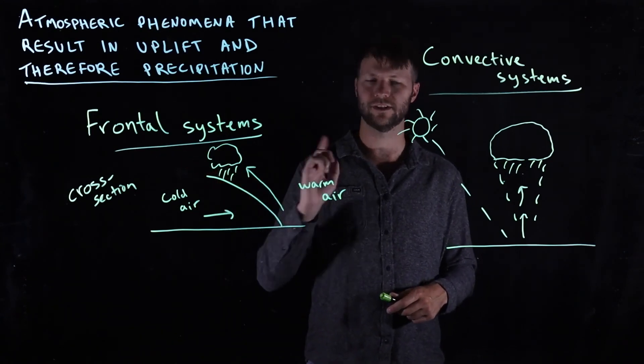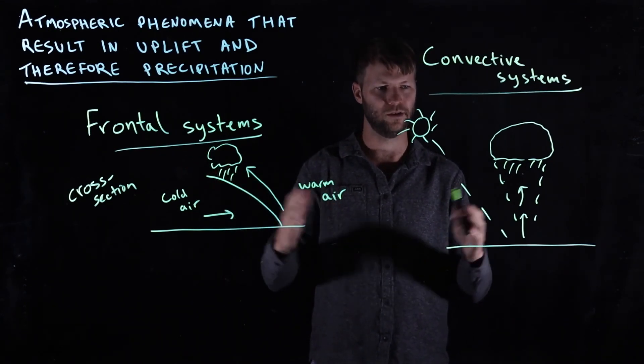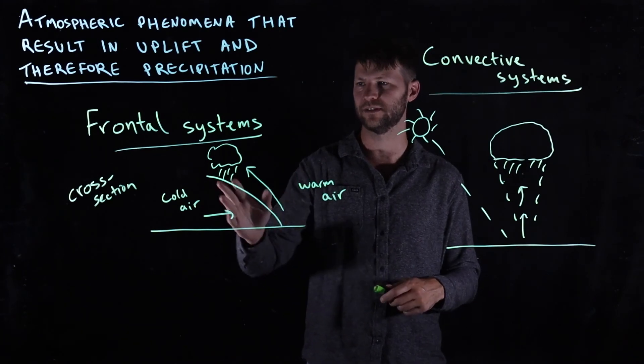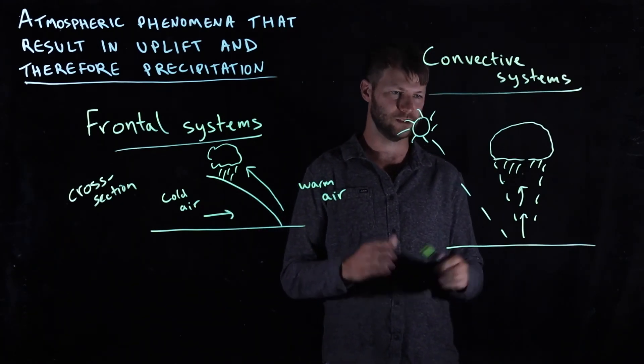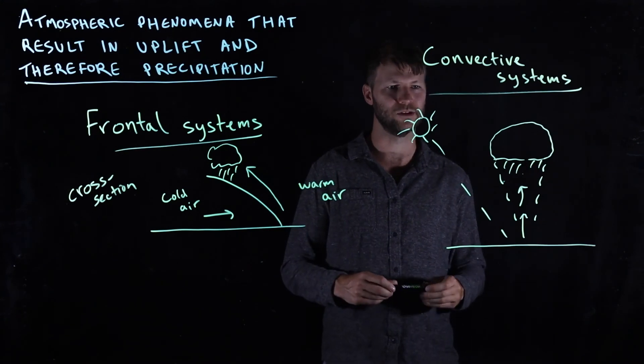These can be hundreds of kilometers across in terms of the horizontal distance on the earth that these frontal systems are moving. Convective thunderstorms are typically smaller, so maybe on the order of 1 to 10 kilometers.